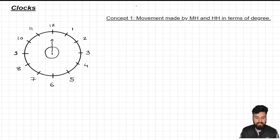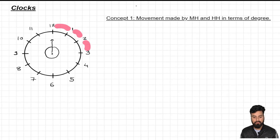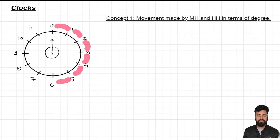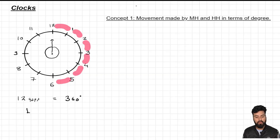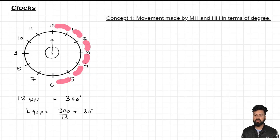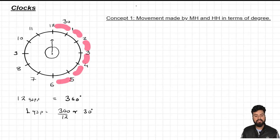This 360 degree movement has been divided equally among 12 gaps on the clock. So we have divided 360 degrees equally among 12 gaps. If we find the value of one gap, it would be 360 divided by 12, which gives us 30 degrees. So the value of one gap in terms of degree is 30 degrees.